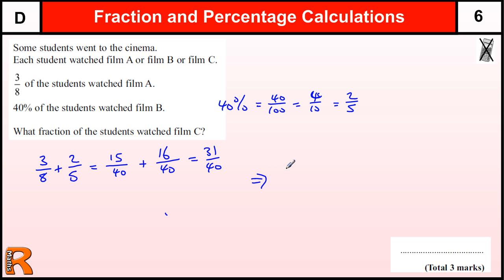So that leaves us with nine out of 40 watch film C. And it does ask for a fraction as your answer, so that's probably the best way of going about it.